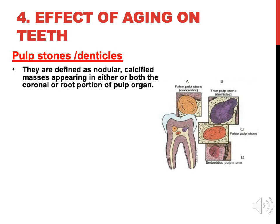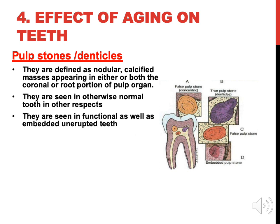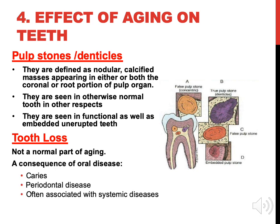Pulp stones or denticles are defined as nodular calcified masses appearing in either or both the coronal or root portion of the pulp organ. They are seen in otherwise normal teeth, as well as in functional, embedded, and erupted teeth. Tooth loss is not a normal part of aging; it is a consequence of oral diseases such as caries and periodontal disease, often associated with systemic diseases.